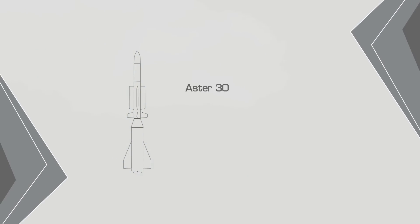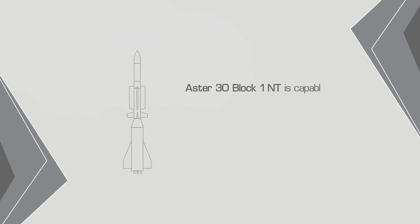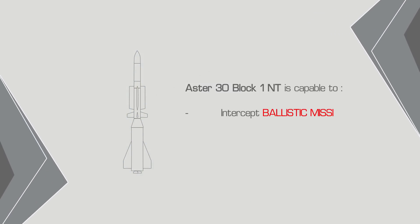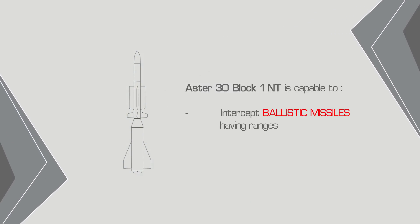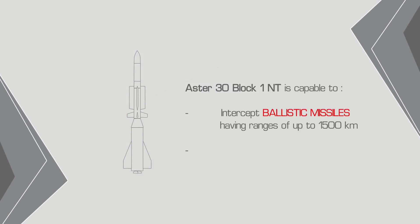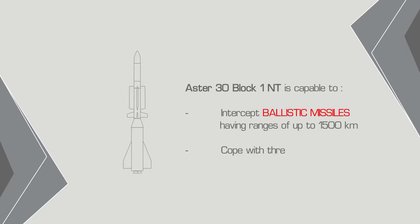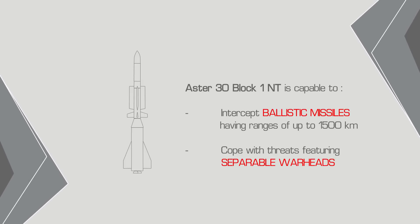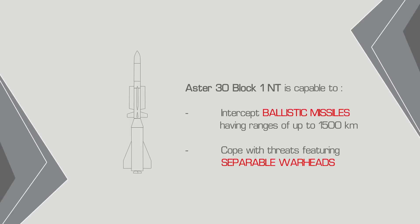In other words, it will be able to intercept faster and smaller targets. Thus, the Aster 30 Block 1NT missile will be able to intercept ballistic missiles which have been fired from further away and which may be equipped with separable warheads.